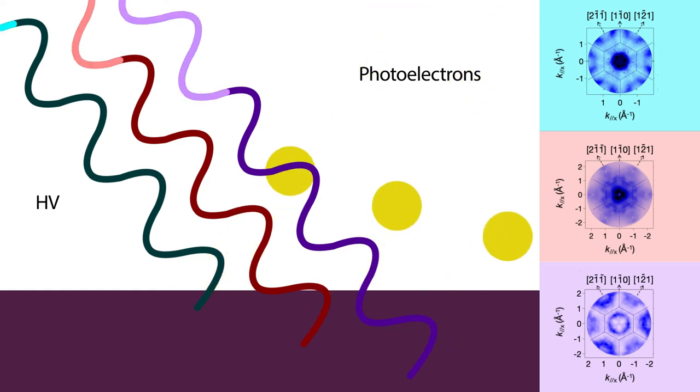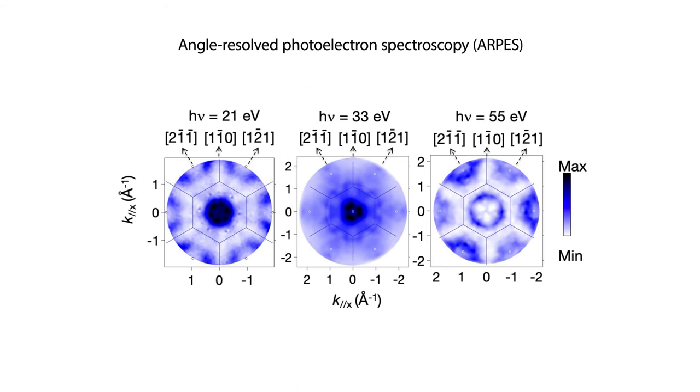Using angle-resolved photoelectron spectroscopy, or ARPIS, they found that this mapping produced three different angular patterns at three different photon energies.